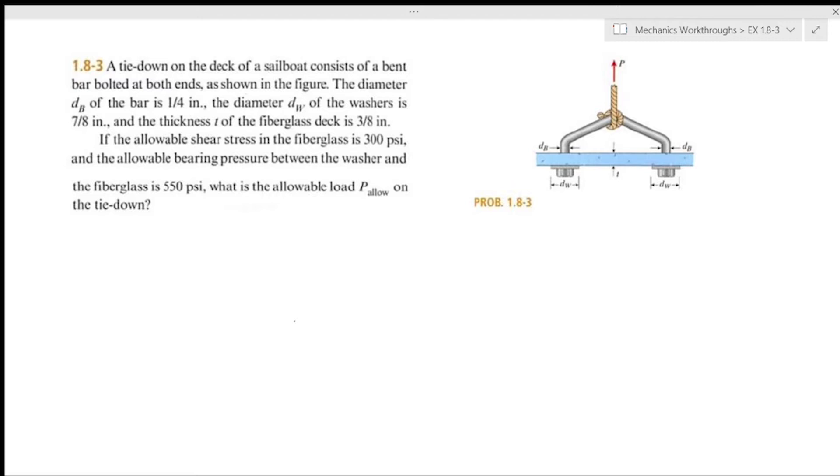If the allowable shear stress in the fiberglass is 300 psi and the allowable bearing pressure between the washer and the fiberglass is 550 psi, what is the allowable load p_allow on the tie down?